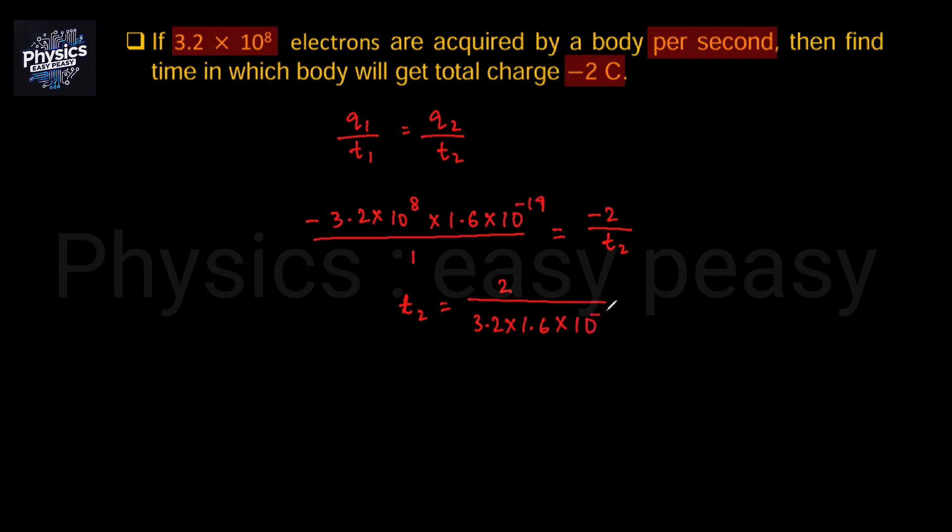Subtract the exponents, then it will be minus. If you simplify it, it will be minus 0.39×10^11. It will be negative in the positive.